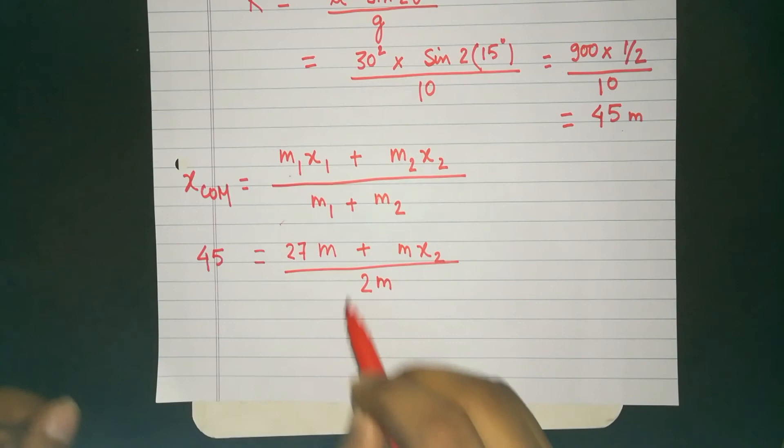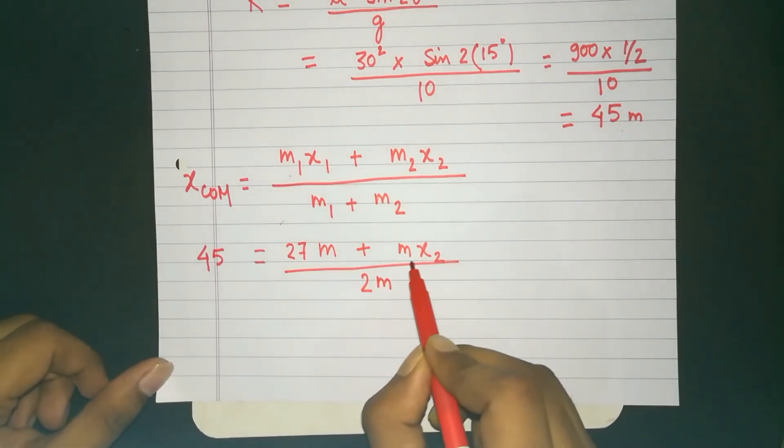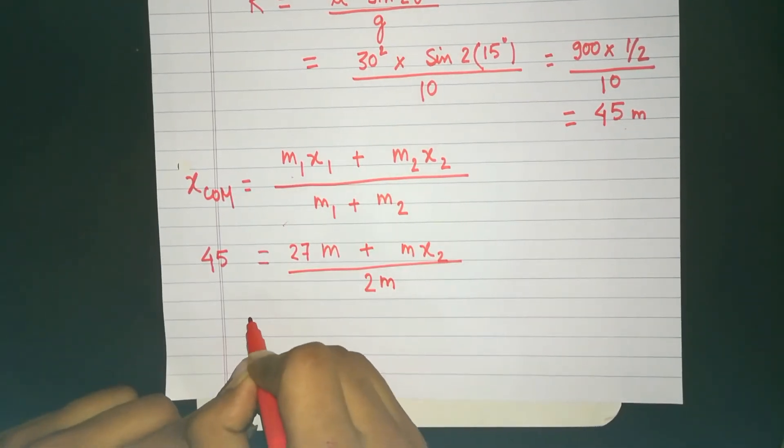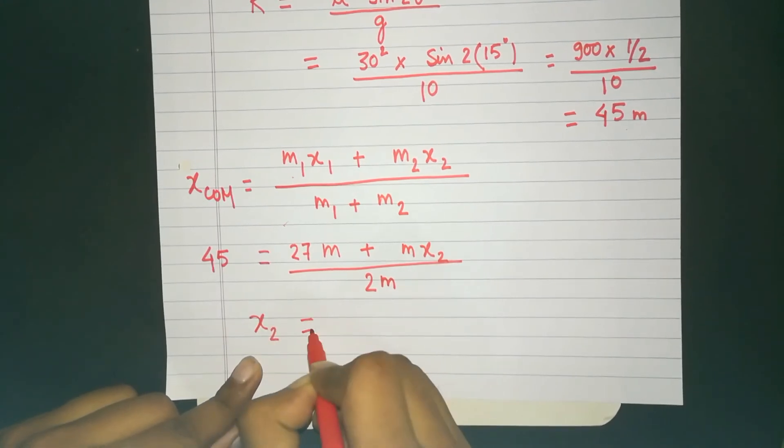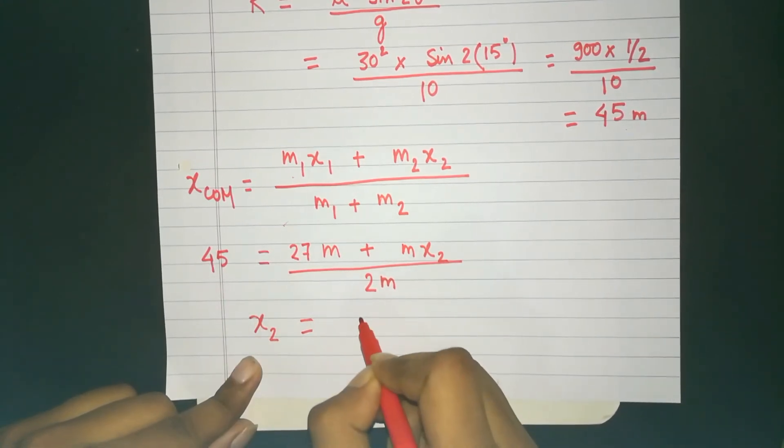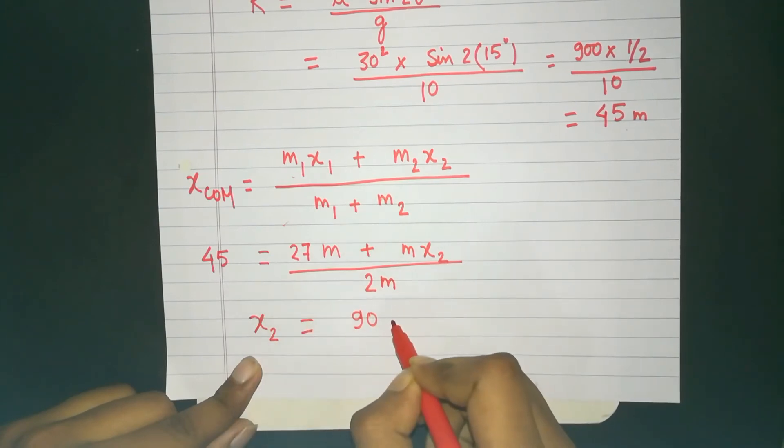So for translation, you would like to apply all the laws of physics on just the center of mass and not on the whole body for simplicity. That's what I did here. So when the particle touches the ground, the center of mass will be range far away from the origin. M cancels out from numerator and denominator. And what we get is x2 equals 45 multiplied by 2, 90 minus 27 goes to LHS.